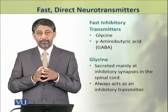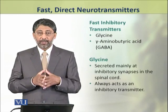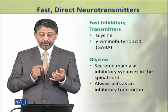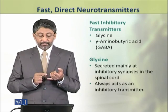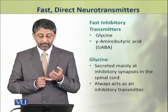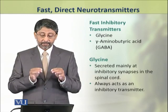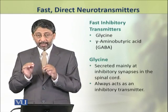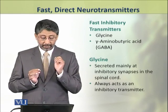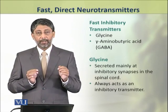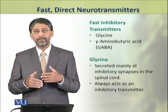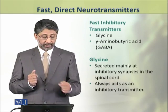Dear students, now we shall discuss the Fast Inhibitory Transmitters. These are glycine and gamma-aminobutyric acid, that is GABA. Glycine is secreted mainly as an inhibitory transmitter in the spinal cord. It always acts as an inhibitory neurotransmitter — there is no known case in which it plays an excitatory role.